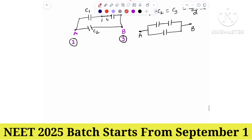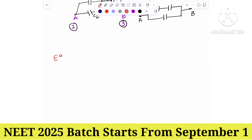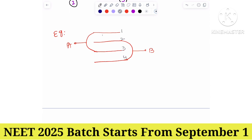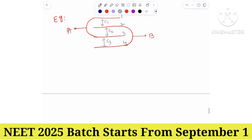Let's go with one more example. Similarly, we have four plates. Plates 1 and 3 are connected together, and plates 2 and 4 are joined together. This group is joined to A and the other to B. Label the plates one, two, three, four — total four plates. From four plates, we obviously get three capacitors: C1, C2, C3.